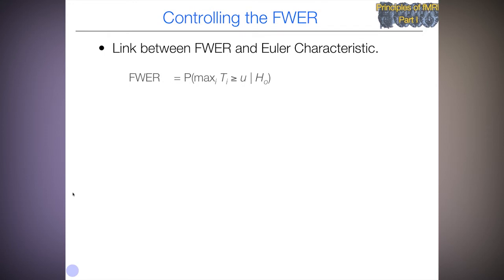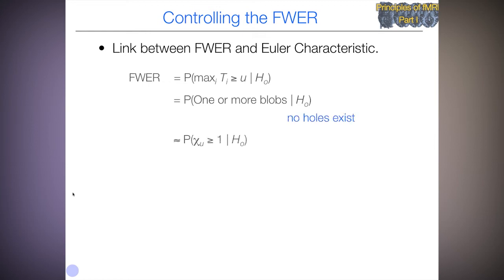How do we use the Euler characteristic to control the family-wise error rate? The family-wise error rate equals the probability that the max t-statistic is above u. If the max statistic is above u, we have one or more blobs after thresholding. Assuming no holes exist, we're interested in the probability that the Euler characteristic is greater than or equal to 1. If we further assume there's never more than one blob, this probability is approximately equal to the expected Euler characteristic — giving us the link between the family-wise error rate and the Euler characteristic.